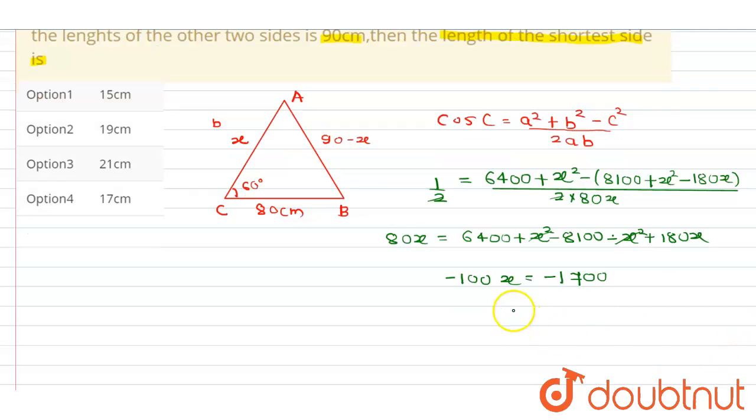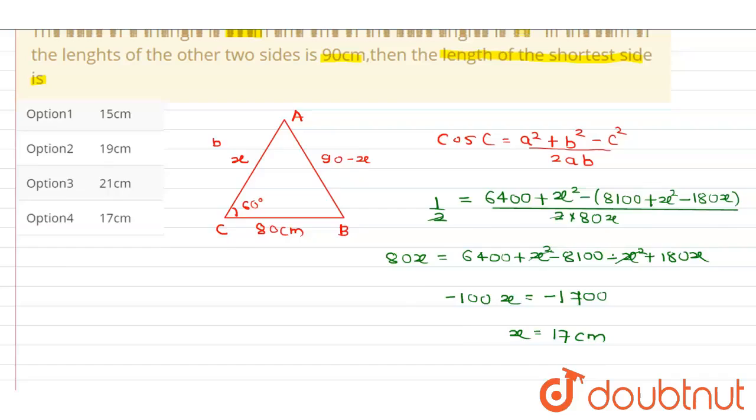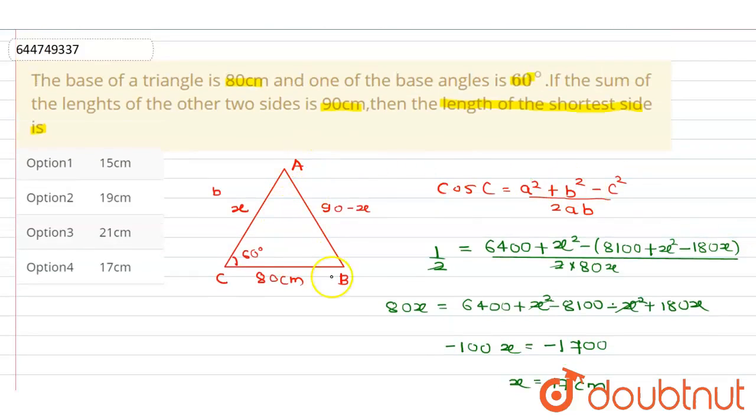Now from this we can write x = 17. x = 17 cm. Now if x = 17 cm, our smallest side will be 17, which is option D.